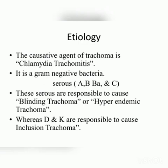Serotypes A, B, Ba, and C are responsible for causing blinding trachoma or hyperendemic trachoma, whereas serotypes D through K are responsible for causing inclusion trachoma.